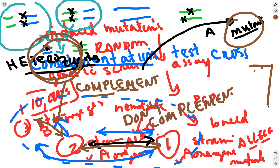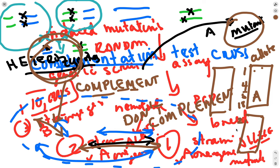The results of complementation test crosses organize the strains into two categories: strains that complement because they have mutations in different genes, and strains that don't complement because they are alleles of the same gene. Scientists are especially interested in the fact that they've found several genes. Having multiple alleles for one gene is also very valuable for studying that gene further.